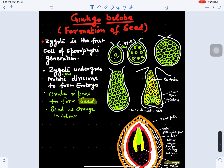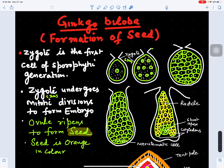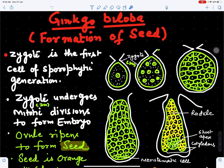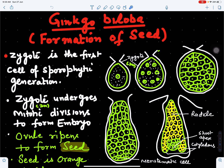We will study in detail how the zygote develops into embryo. When male strobili produce pollen grains and female strobili has archegonia with mature egg, the egg and male sperm fuse to form a diploid structure called the zygote. This is the zygote produced after fertilization — the first cell of the sporophytic generation, diploid in genetic constitution.